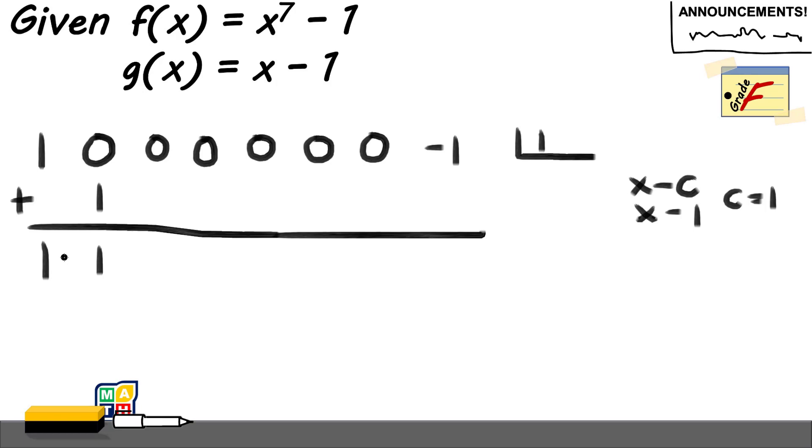And then repeat the previous processes. Of course, it's too obvious that it is easier because you only have 1. So 1 times 1, 1. 0 plus 1, another 1.